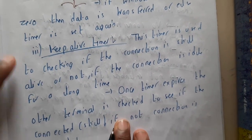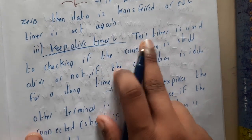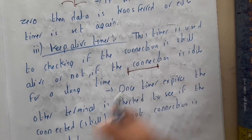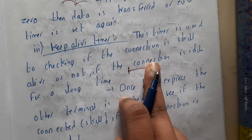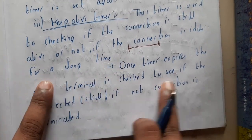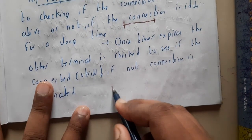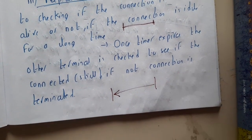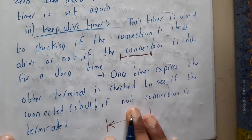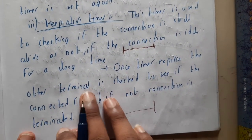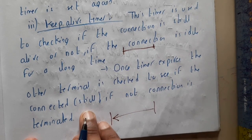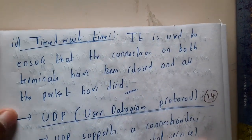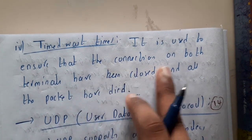The keep alive timer is used to check if the connection is still alive. If the connection is idle for a long time, it will be disconnected. For example, if your friend stops talking for two to three minutes during a call, you automatically disconnect. Similarly, once the keep alive timer expires, the other terminal is checked — if there is no response, the connection is directly terminated.